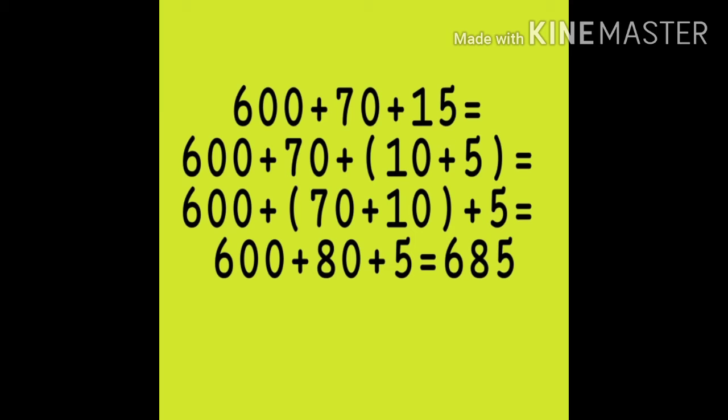Now look at the number 15. Is this a ones digit? No. So we can give carry over to the tens digit. We can write 15 as 10 plus 5. So the 10 will be carried over to the tens column. We will write 600 plus 70 plus 10 plus 5, which means 600 plus 80 plus 5. 70 plus 10 equals to 80, and 80 plus 5 gives us 685. So the answer is 357 plus 328 equals to 685.